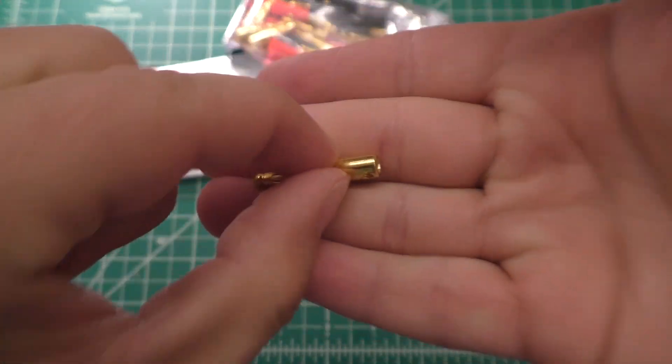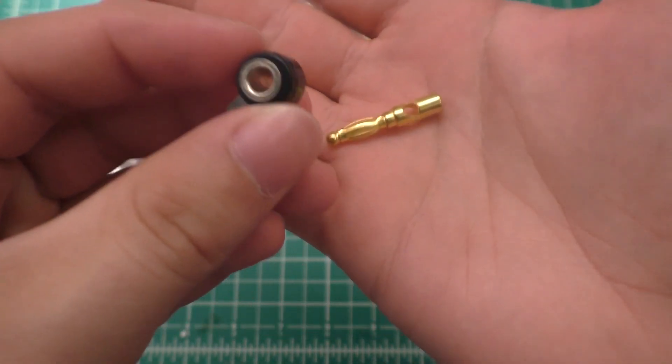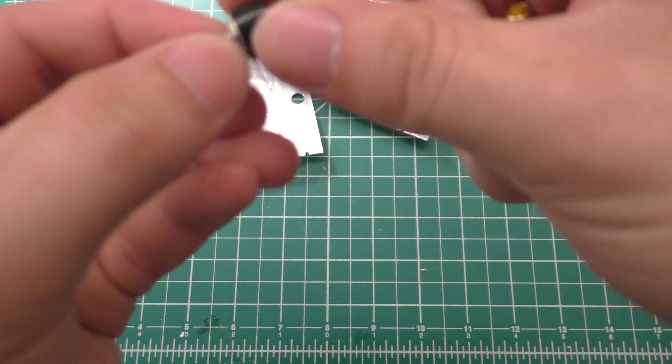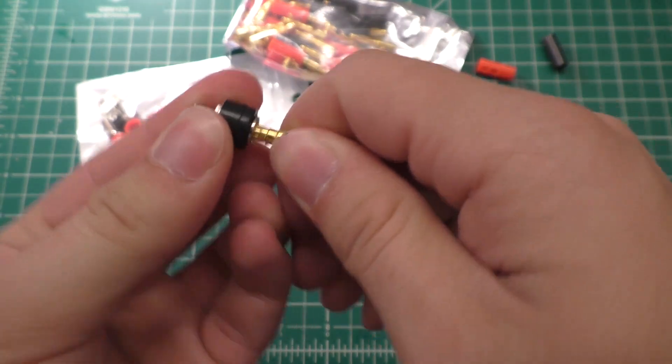So the male banana plugs actually look like they're gold plated. The inside of these aren't. I don't think that's gonna be too critical. I'm just hoping that these things are going to be thick enough to the point where they can handle about 10 amps of current or so.